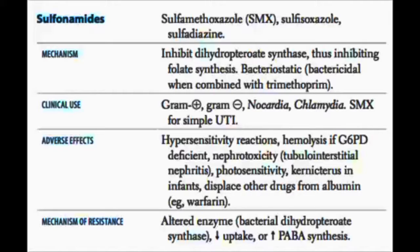Sulfonamides are very often given with trimethoprim because they are synergistic together. We have to worry about allergies. They also put oxidative stress on the cell, so we have to worry about hemolysis in people with G6PD deficiency. They can cause interstitial nephritis, photosensitivity, and they displace other drugs off albumin, which increases serum concentration — a drug-drug interaction at the level of albumin, not just CYP inhibition.